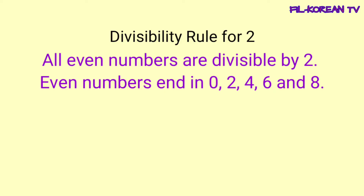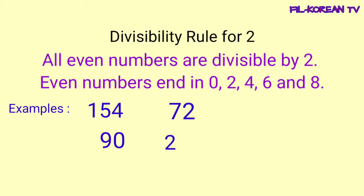Malalaman natin kaagad kung ang isang number ay divisible by 2 o hindi sa pamamagitan ng pagtingin lamang sa kanyang last digit o yung numero na nasa one's place. Examples: 154, 90, 72, 238, and 16.